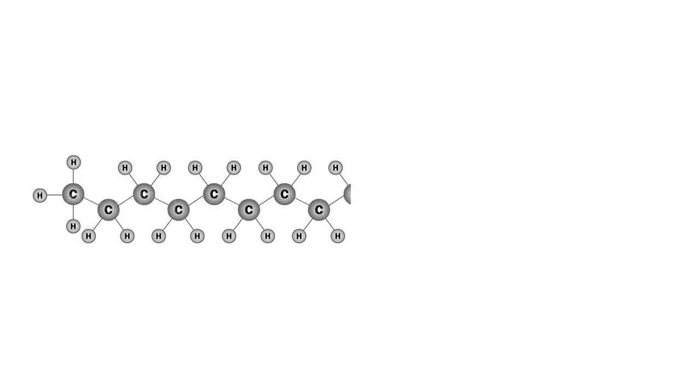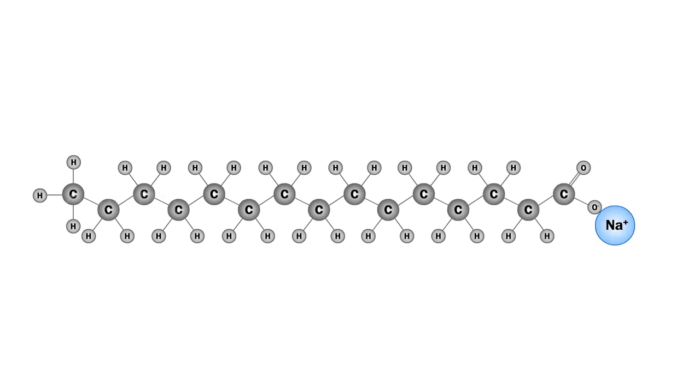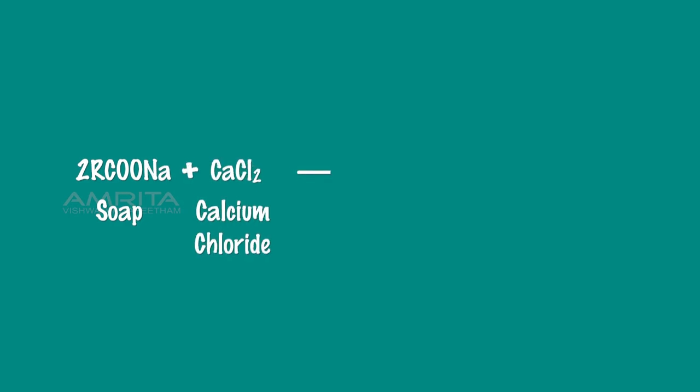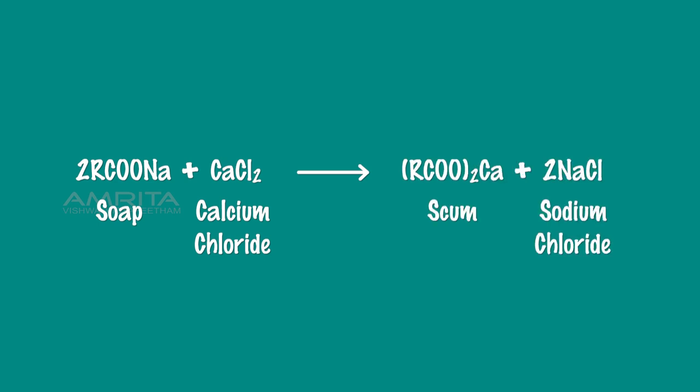This is because in beaker C, the calcium ions present in the dissolved calcium chloride react with soap to form calcium salt of soap which is insoluble in water and appears as scum. The reaction is: 2 RCOO Na plus CaCl2 gives RCOO2 Ca plus 2 NaCl.